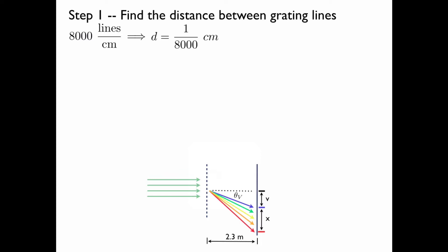If we want to convert this to meters, we have to divide by 100. This gives us 1.25 micrometers as the spacing between the grating lines.